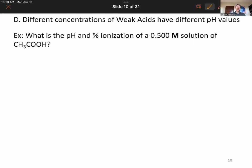Now, it turns out that different concentrations of weak acids have different pH values and different percent ionizations as well. So this is the exact same acid, acetic acid, except now we're going to do 0.5 molarity, whereas we did 0.1 molarity before. That says, what is the pH and percent ionization?